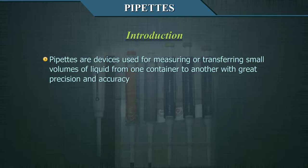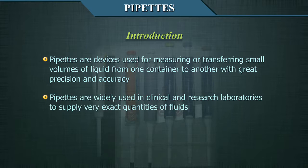Pipettes are devices used for measuring or transferring small volumes of liquid from one container to another with great precision and accuracy. Pipettes are widely used in clinical and research laboratories to supply very exact quantities of fluids.